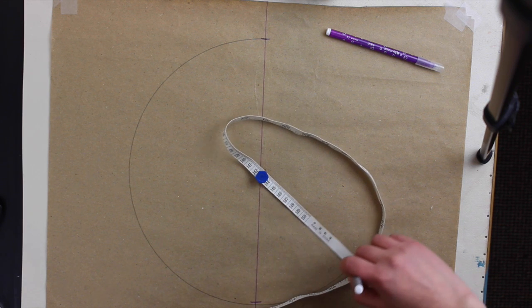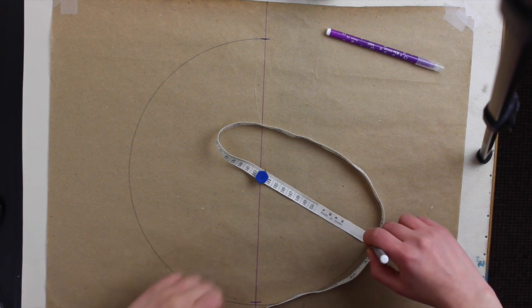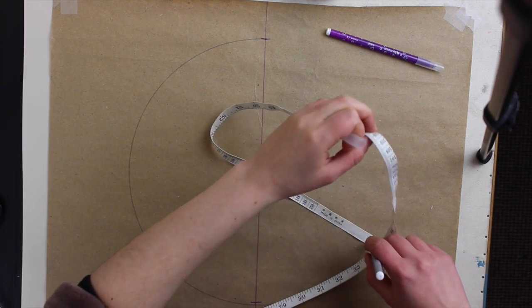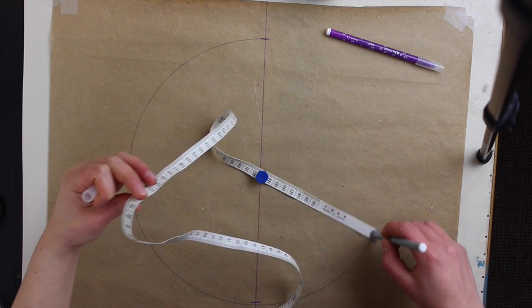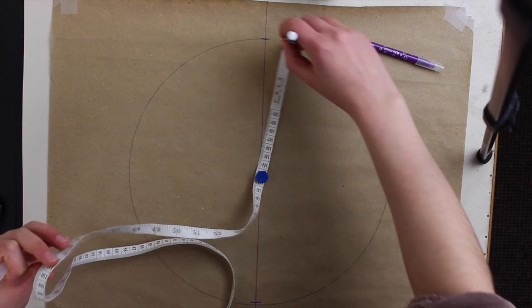Since it's a five-pointed star and all the sides are equal, equidistant from each other, it's easier to draw it into a circle. It will make sense later on, I promise.